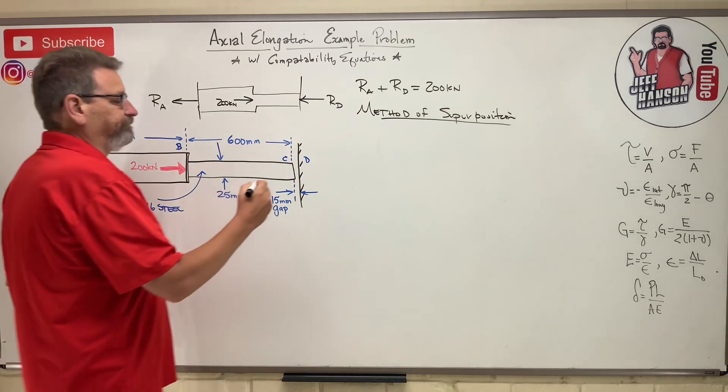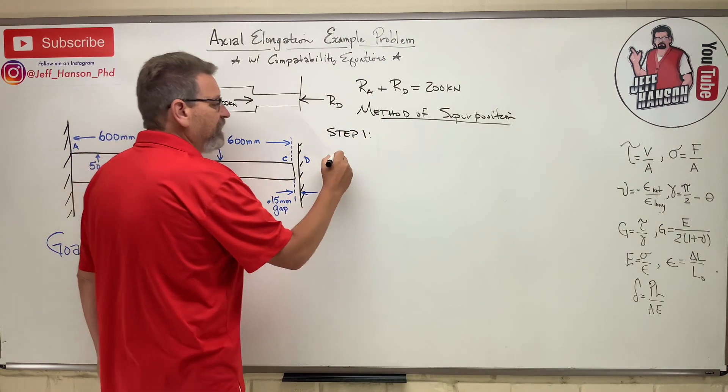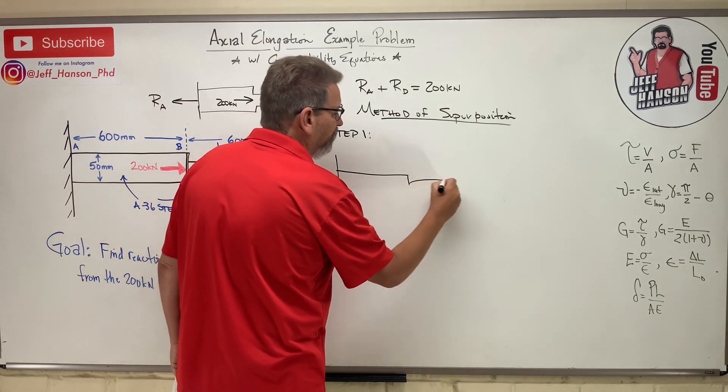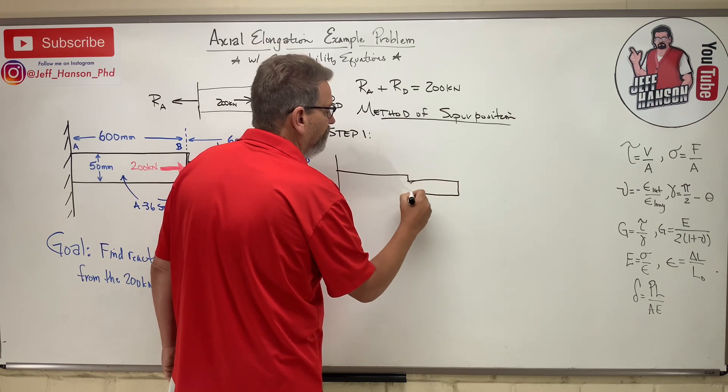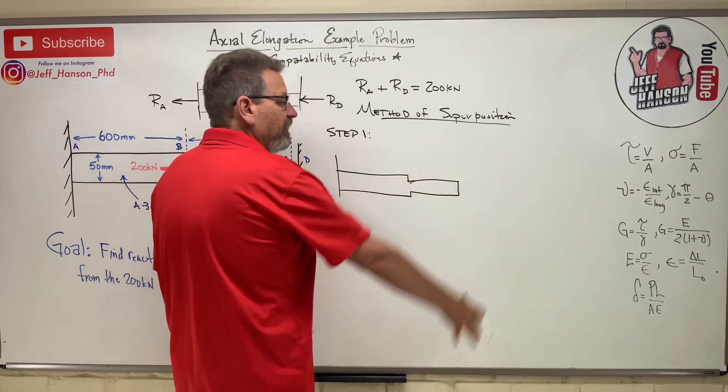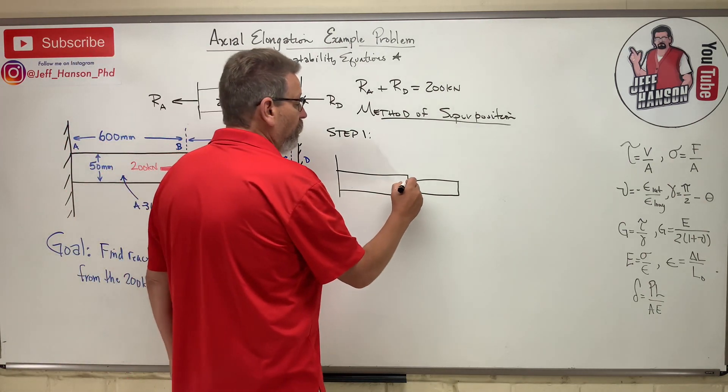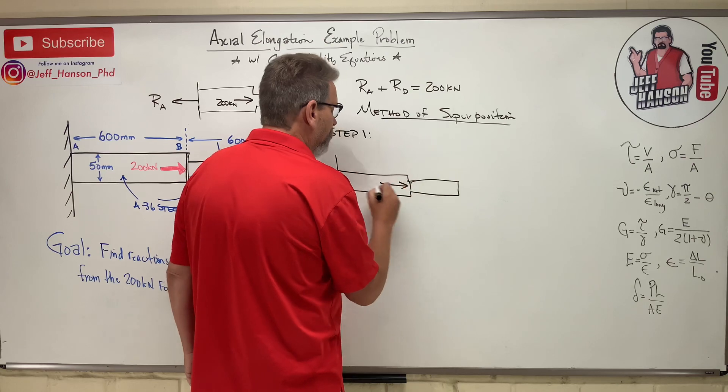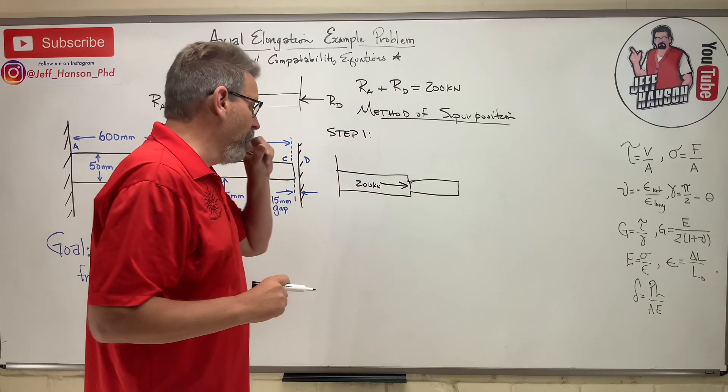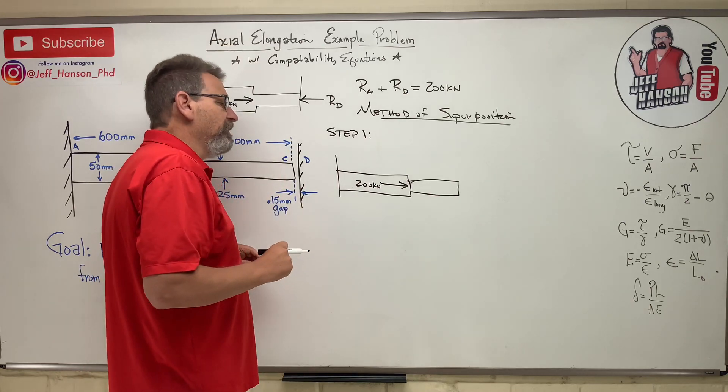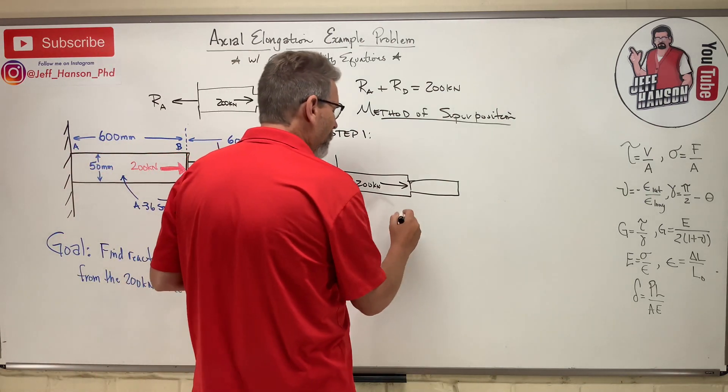So step one. Let's let this thing go. So we're going to have a wall. There's our bar. We've deleted that wall over there, the wall at D, and we're just going to let this thing grow. So here we go. We've got, bam, 200 kilonewtons on there. Now, if there's no wall over there at all, this thing is just going to extend from axial elongation, right? So we need to calculate how much it's going to extend.